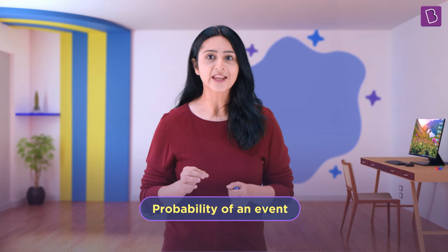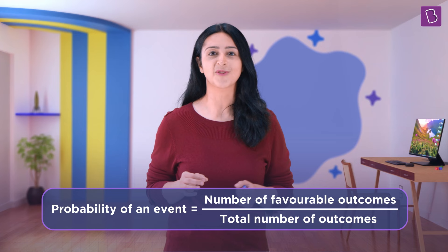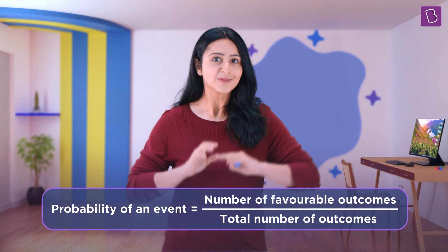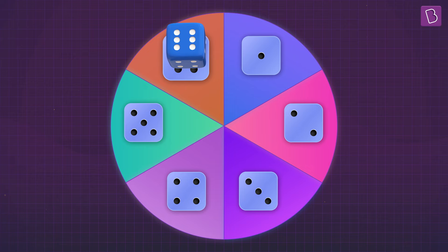In other words, the probability of an event is number of favorable outcomes upon total number of possible outcomes. Favorable outcomes are the expected outcomes of an event. And of course, all outcomes are equally likely, meaning they have an equal chance or probability of occurring.